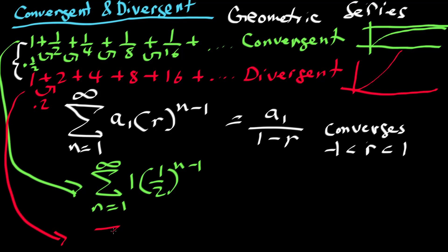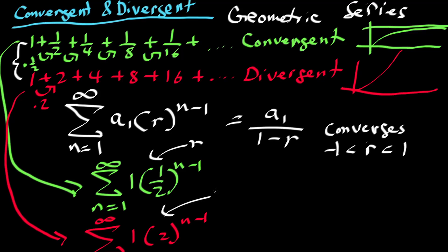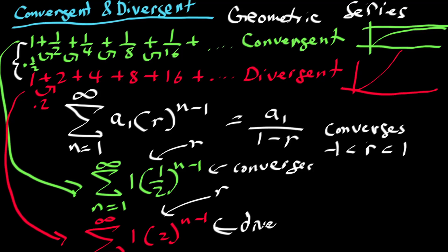We can generalize the second series as the sum from n equals one to infinity of one times two to the (n minus 1). Here, r equals two, which is greater than one, so this series diverges. Our first series has r equals one-half, which is between negative one and one, so it converges. We can sketch the growth to clearly see that the first converges to a limit while the second diverges.